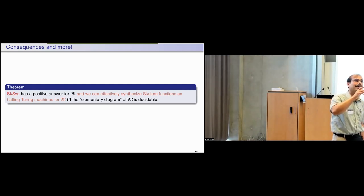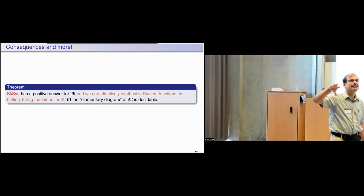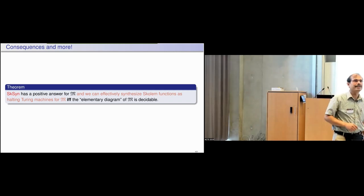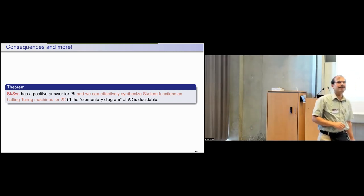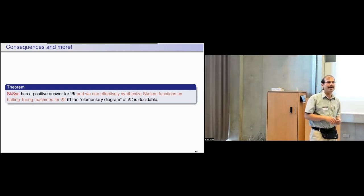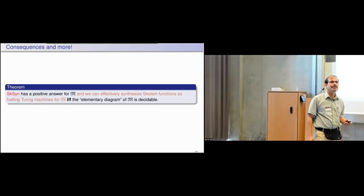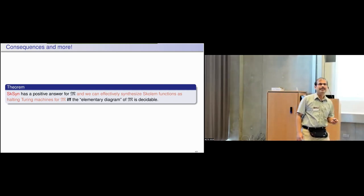The original logic is embedded inside the elementary diagram. If the elementary diagram is decidable then the original theory has to be decidable, but the original theory can be decidable while the elementary diagram is not decidable. We have examples of this: the decidability of the original theory is not sufficient to give you algorithmic synthesis — you need decidability of the elementary diagram.